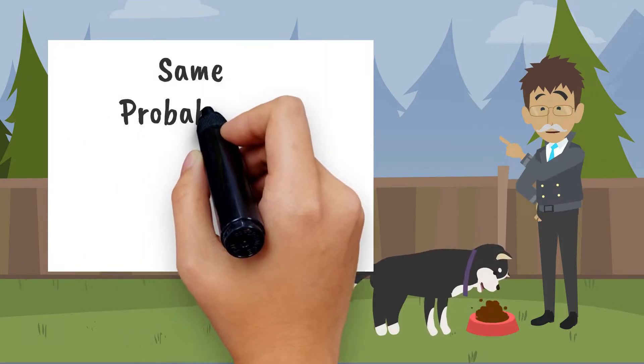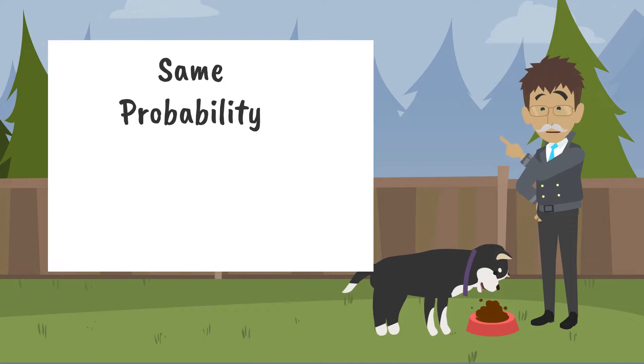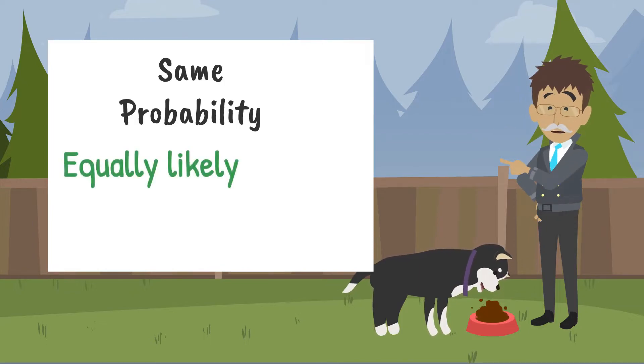When events have the same probability, we say the events are equally likely. Since Random goes out the front door half of the time, the other half she likes to go out the back. Since the probability of Random leaving by either door is 50%, the events have the same probability of occurring and are said to be equally likely to occur.